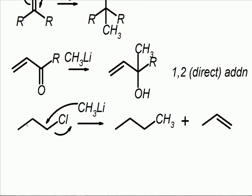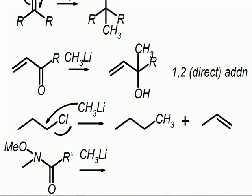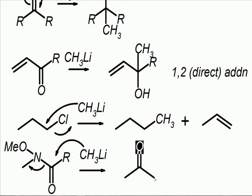One last reaction — we showed this in the previous Grignard video, but I want to show it one more time because it's kind of cool. If you take the Weinreb amide and subject it to methyllithium or any organolithium, it's going to add and kick off that amide. What you get out is the ketone — there's our methyl group and there's the R group.